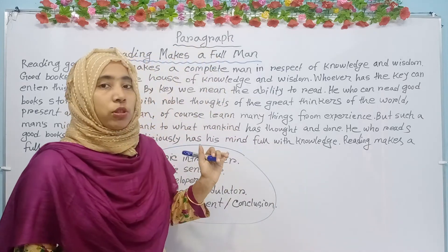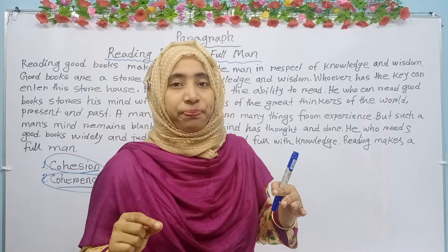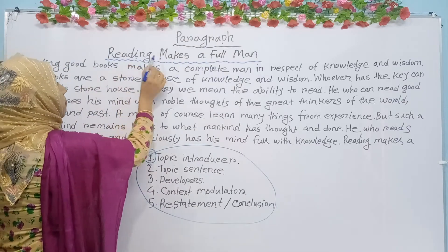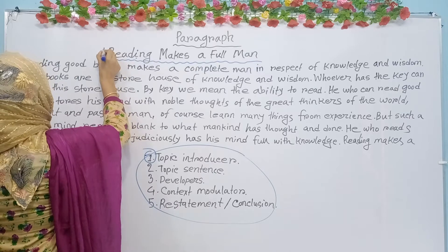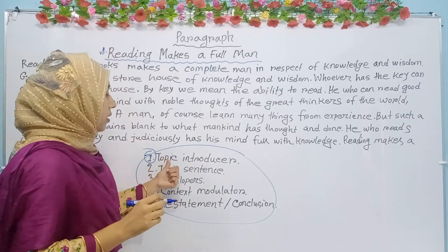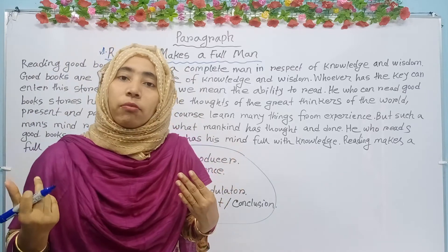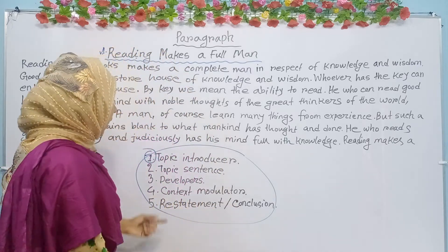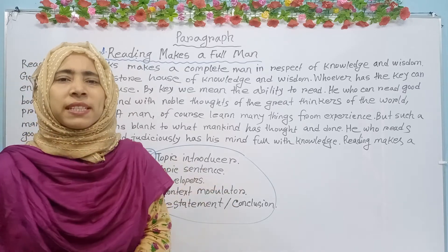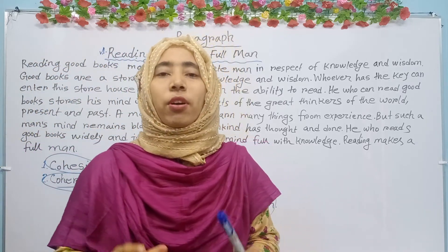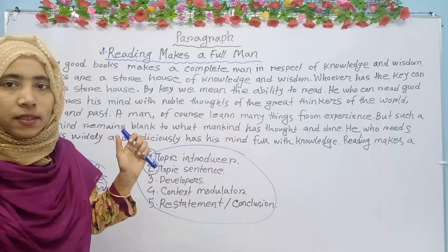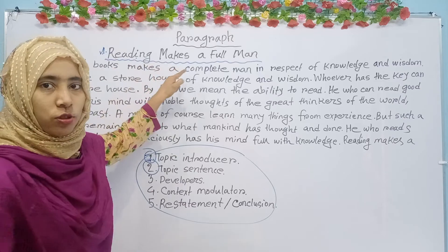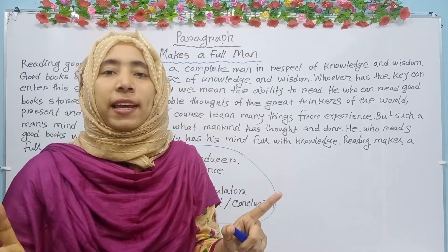For topic introducer — actually, this is the topic introducer which gives you what may be our paragraph. Here you see the topic: 'Reading makes a full man.' This is for topic introduction. For number one, this is the topic introduction, from which we can get an idea of what our paragraph may be. And then for number two, the topic sentence gives the specific idea about the topic introducer, while the topic introducer gives us the general idea of what the paragraph may be.